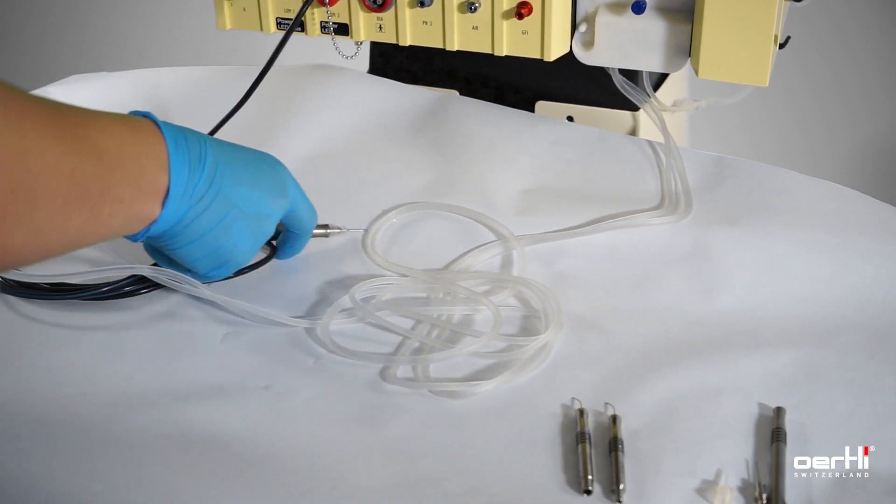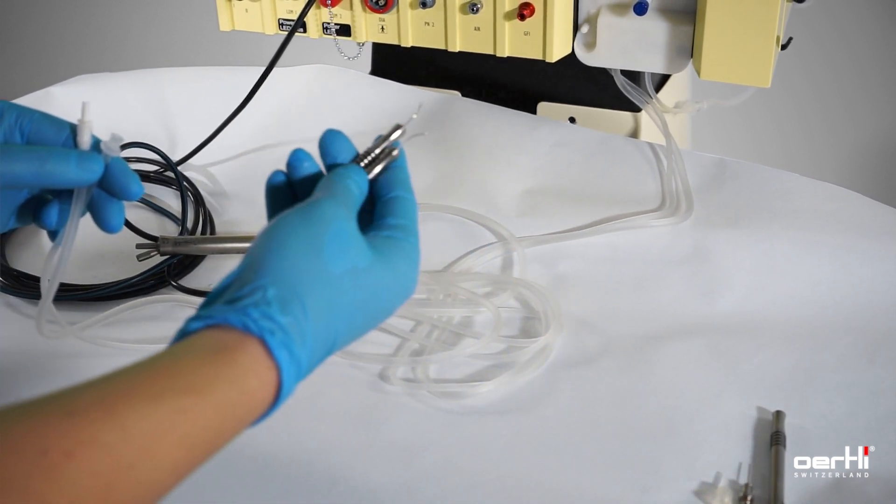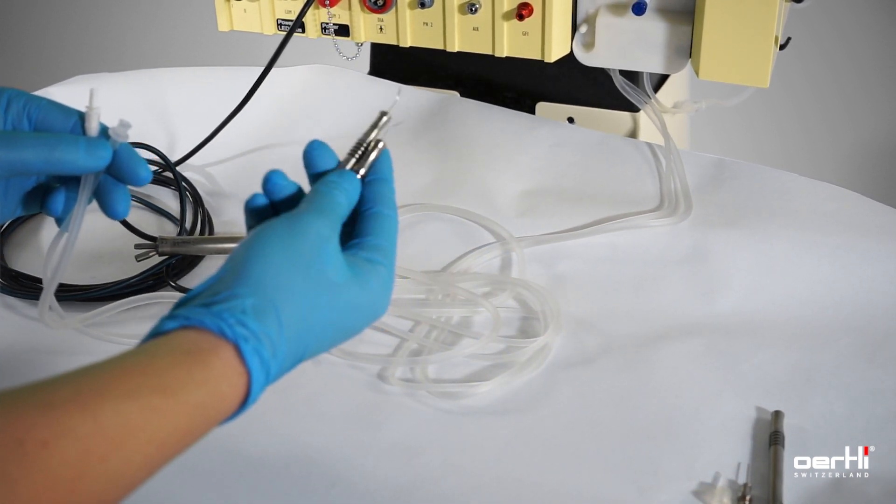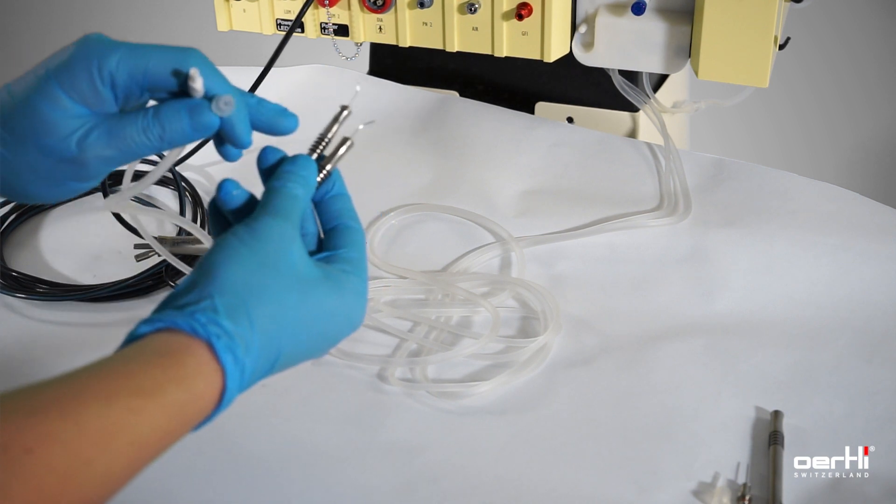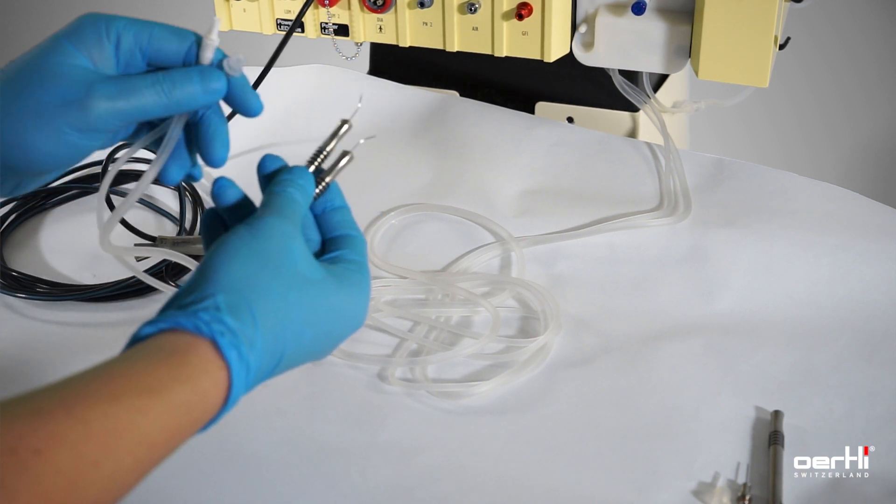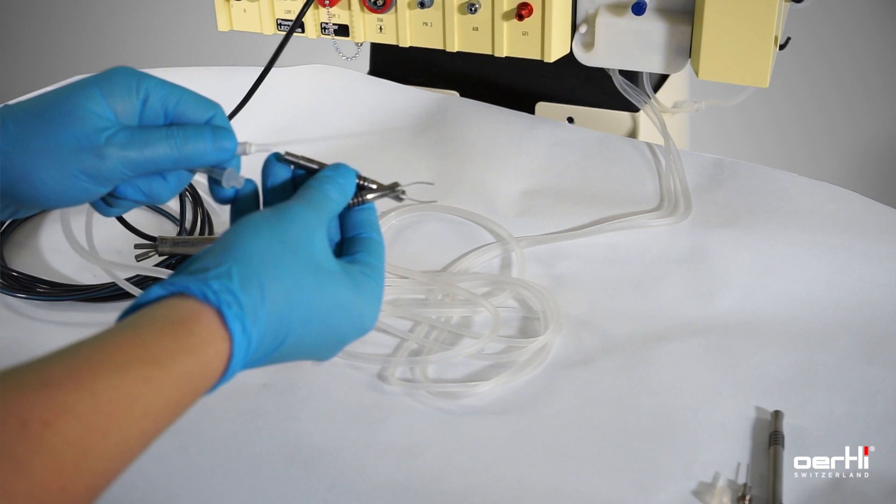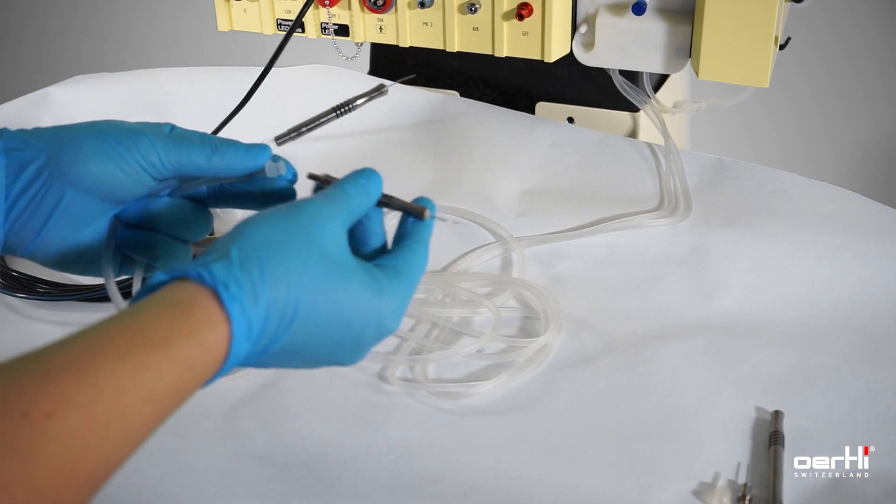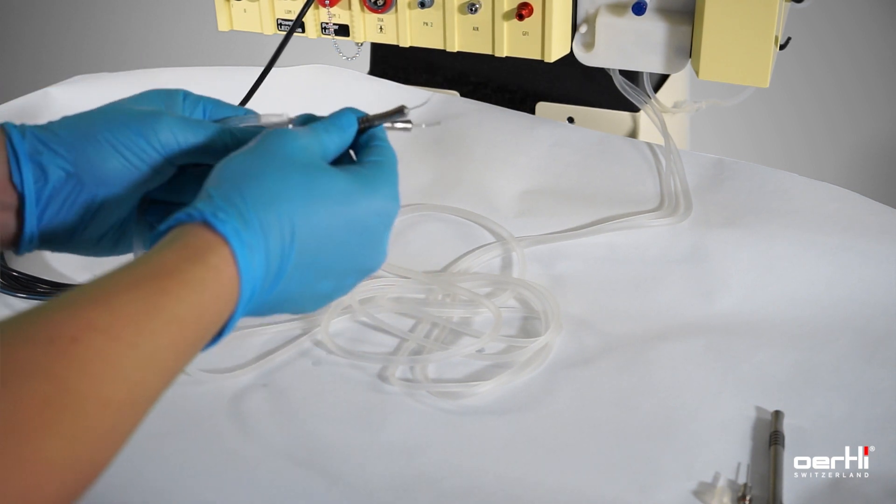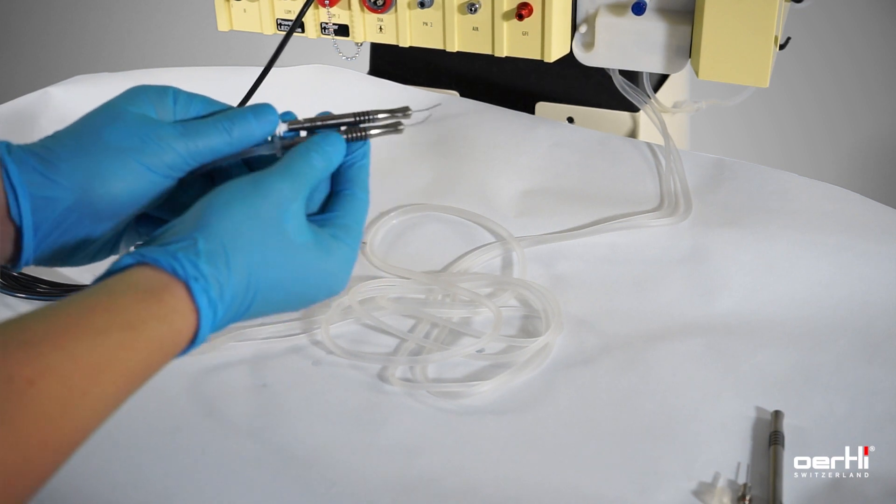Then either you use the bi-manual reusable handpiece or single use. The green part indicates the irrigation, so you attach the irrigation tube and on the other hand side the aspiration tube, like this.